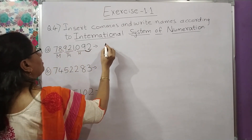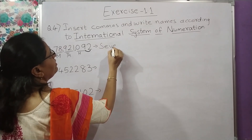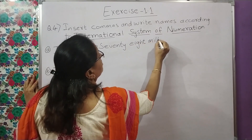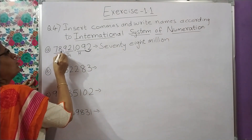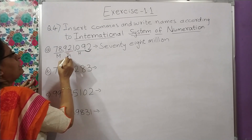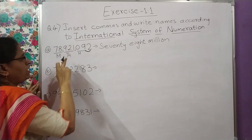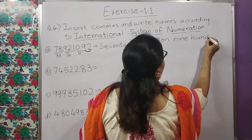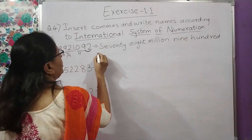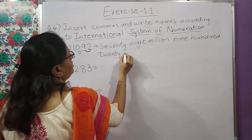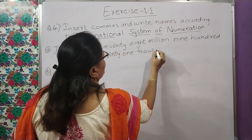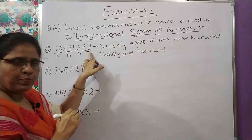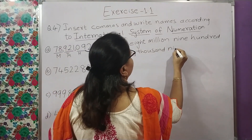Toh number name likhte hain: seventy eight million, nine hundred twenty one thousand, ninety two.